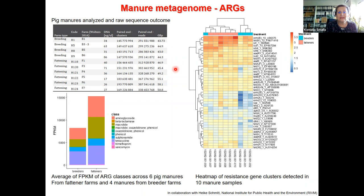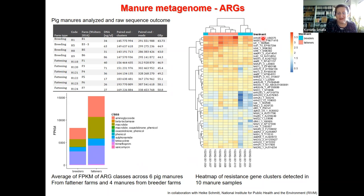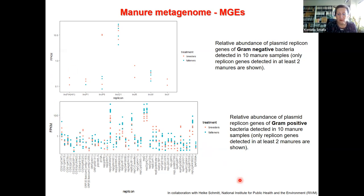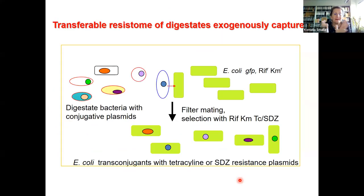When we do a manure metagenome - these are the same manures analyzed by metagenomic sequencing - you see the advantage: we get an idea of the highly abundant resistant genes and their classes, for instance we learned about ernB here. But when we looked at the metagenome for mobile genetic elements, we were pretty frustrated, because very few samples showed detection of IncP1 or IncQ plasmids. IncW plasmids were more abundant, and surprisingly, plasmids from Gram-positives were about tenfold higher in abundance.